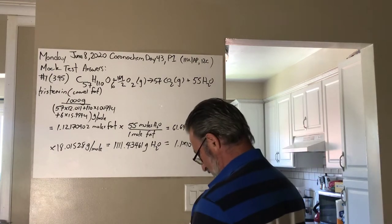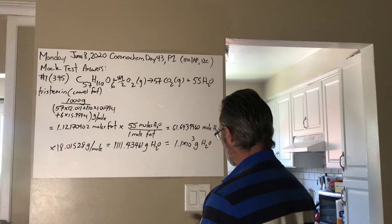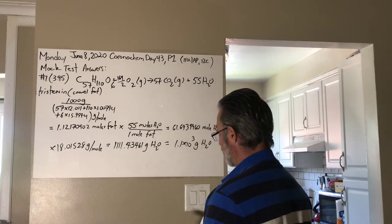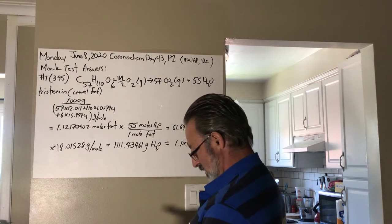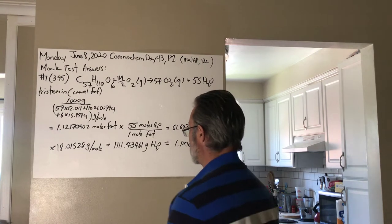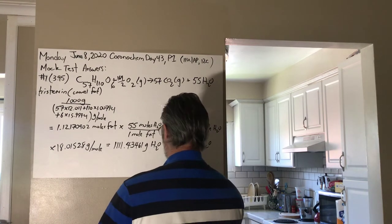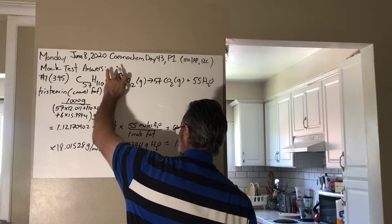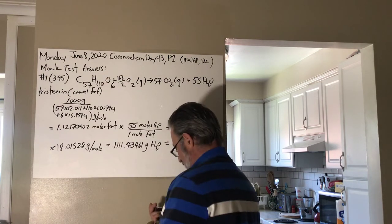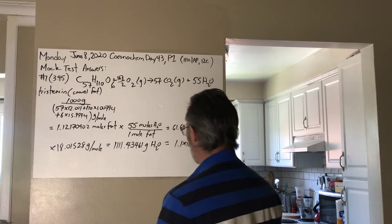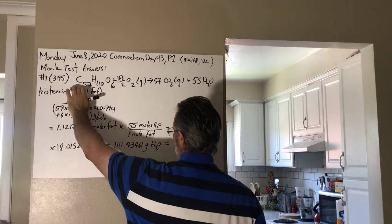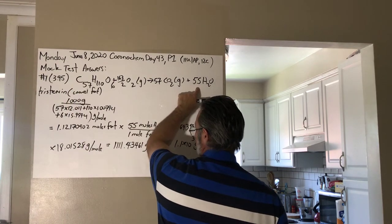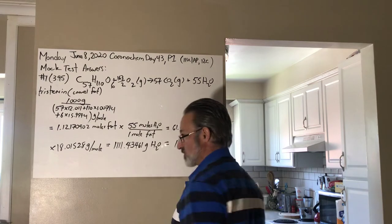And then there's the 6 from the water. So 57 times 2 gives you 114. 114 plus the 55 gives you 169. And then minus the 6 from the tristearin. So that gives you 163. So 163 over 2. I just had a feeling I put the wrong number here. This is 163 over 2.